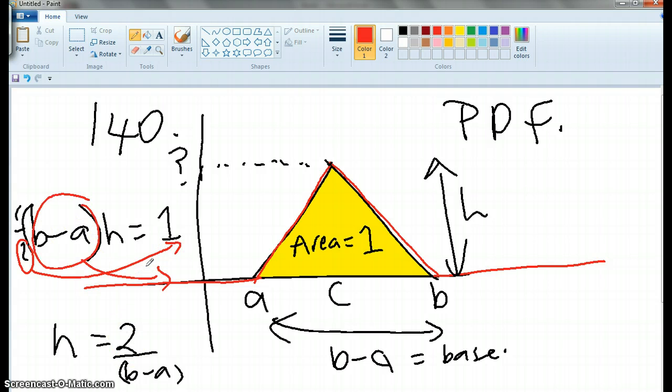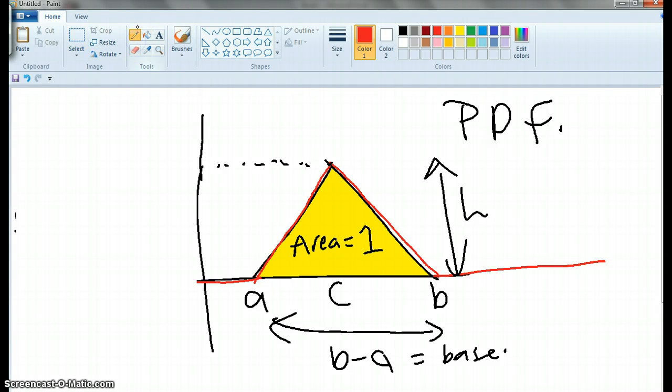Make sense? So in the book you've got that there written. It's actually got a height here of the two over b minus a. So there's nothing kind of fancy about that, it's just area of a triangle formula. Okay, okay.